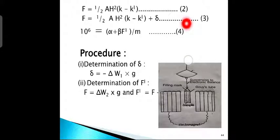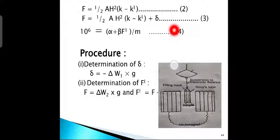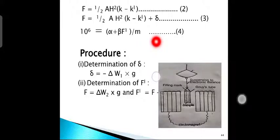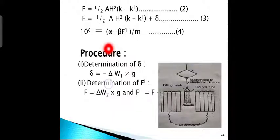For a sample of constant length and cross-section area, the factor H² is a constant. By introducing the density of the sample, the equation is rewritten as: 10⁶χ_g = α + β(F′/m), where α is a constant allowing for the displaced air and equals 0.029 × specific volume of the sample, and β is a tube calibrated constant.